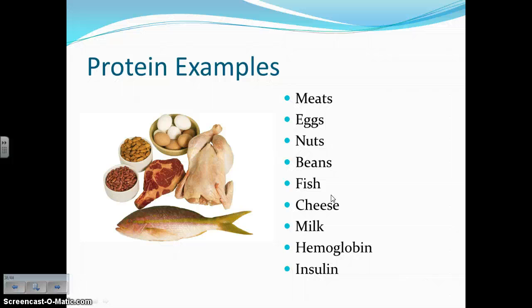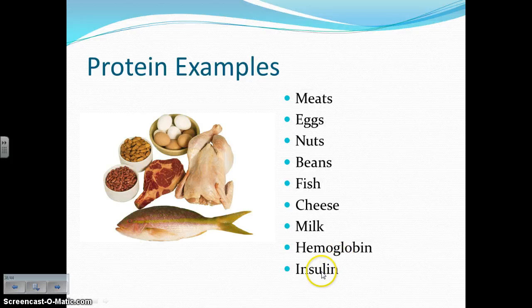Here are some foods that are full of proteins: meats, eggs, nuts, beans, fish, cheese, and milk. Some additional proteins you may or may not have heard of: hemoglobin is a protein used for getting oxygen into your blood, and insulin is used for maintaining the amount of glucose in your blood. Both of those are proteins.